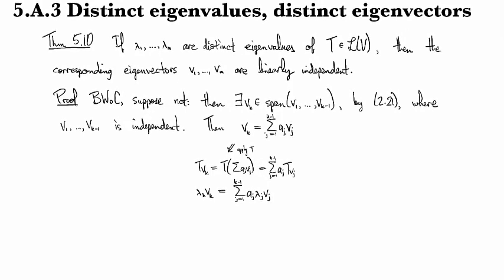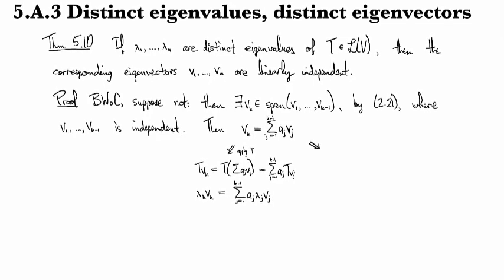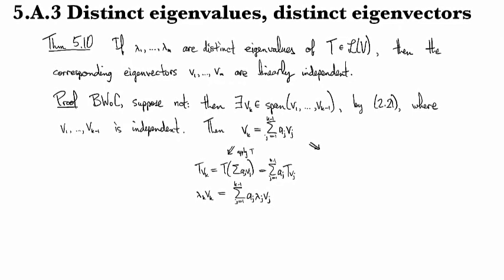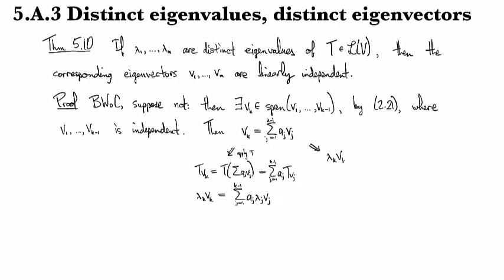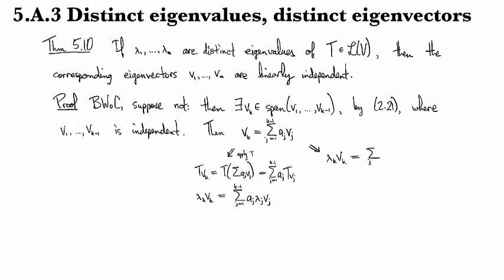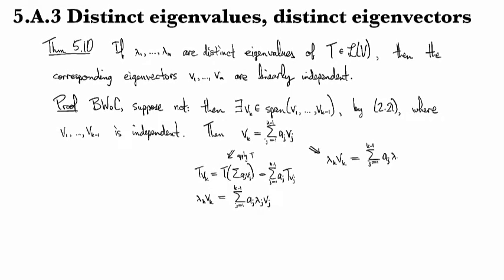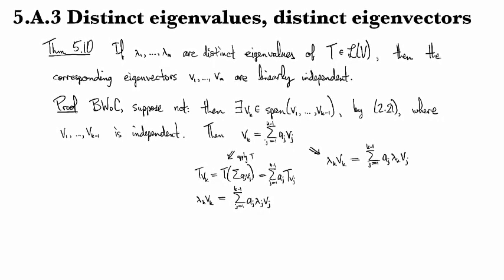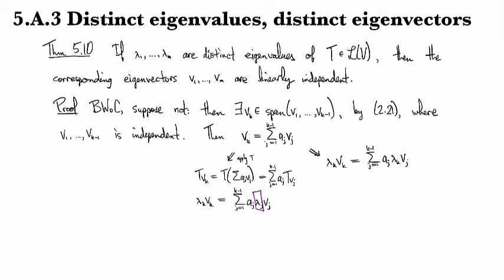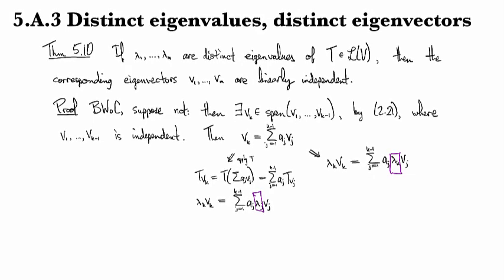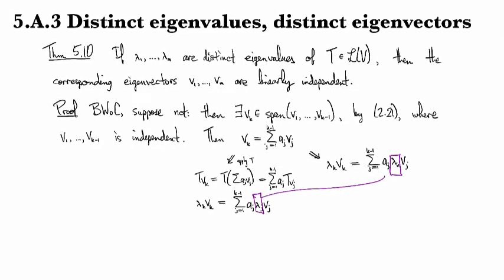Meanwhile, back at our expression for v_k, the other thing I could have done is just simply multiplied both of these by lambda_k. So then lambda_k v_k is equal to sum j equals 1 to k minus 1 a_j lambda_k v_j.